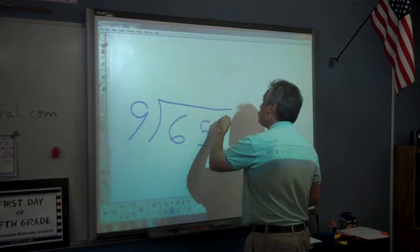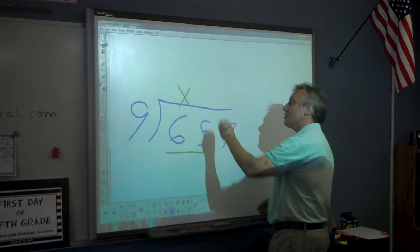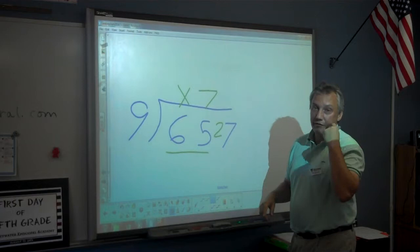Does 9 go into 6? It does not. So then we see if 9 goes into 65. 9 goes into 65 seven times with a remainder of 2. We put the 2 in front of the next number we haven't used yet. 9 goes into 27 three times and we're done.